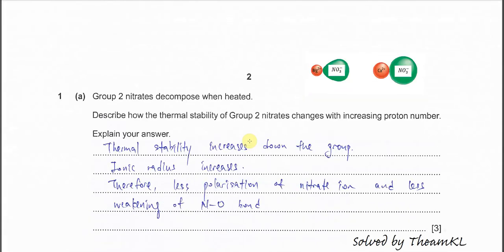Part A. Group 2 nitrates decompose when heated. Describe how thermal stability of the Group 2 nitrate changes with increasing proton number. Thermal stability increases down the group — from magnesium ion to calcium ion to strontium to barium ion — thermal stability is greater. This means it is harder to decompose.